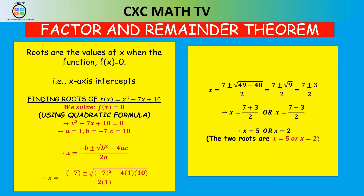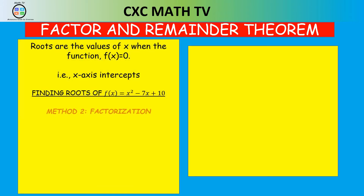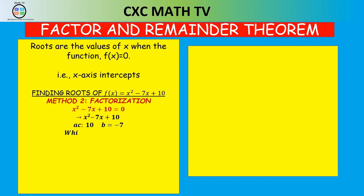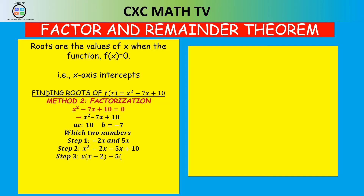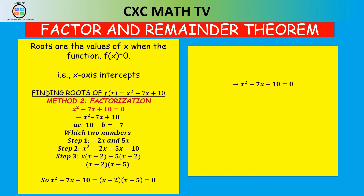If you wanted to do it by factorization, you'd ask yourself: which two numbers multiply to give 10 but add to give negative 7? Those two numbers are minus 2 and minus 5. So we split minus 7x and write x squared minus 2x minus 5x plus 10, factor out x to get x times (x minus 2), then factor out negative 5 to get minus 5 times (x minus 2). Factoring out x minus 2 gives us (x minus 2)(x minus 5). Setting equal to zero, x equals 2 or x equals 5.